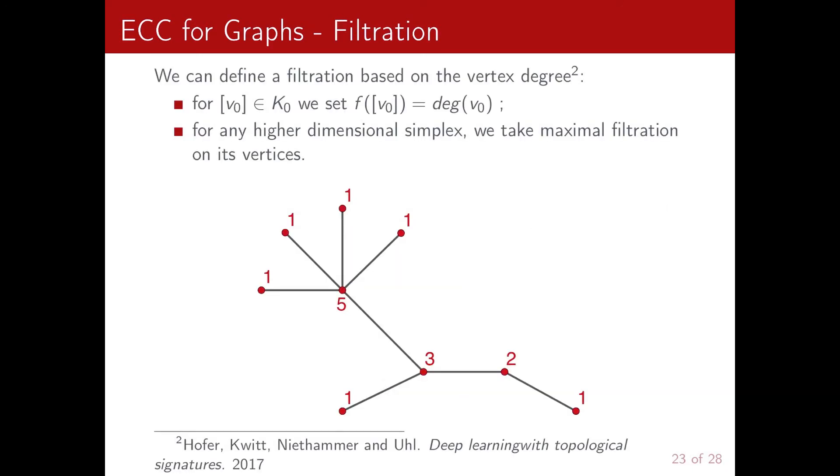So in the second experiment, we tackled graph classification. So following the approach by Hofer and collaborators, we can define a filtration for an undirected graph based on the vertex degree. So we set the filtration for each vertex as its degree, so the number of connections it has. And we propagate it up to higher dimensional simplices by taking the maximum over the vertices.